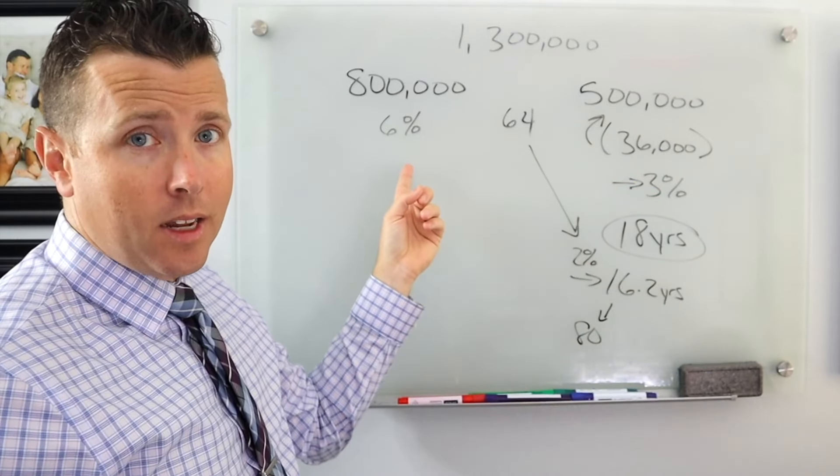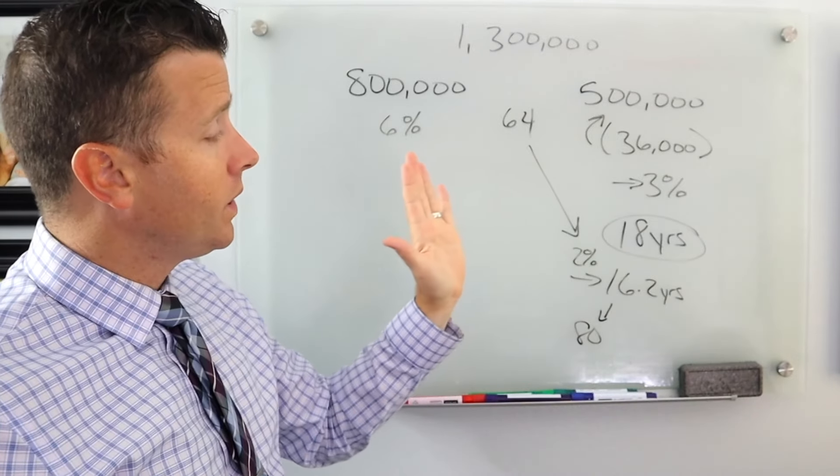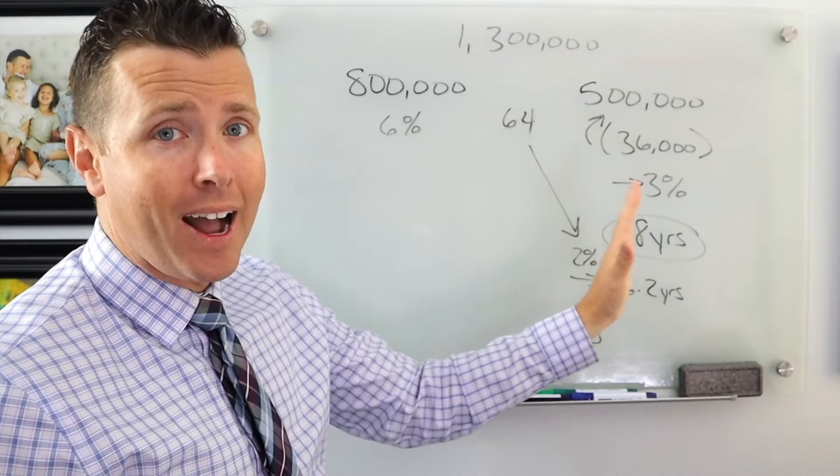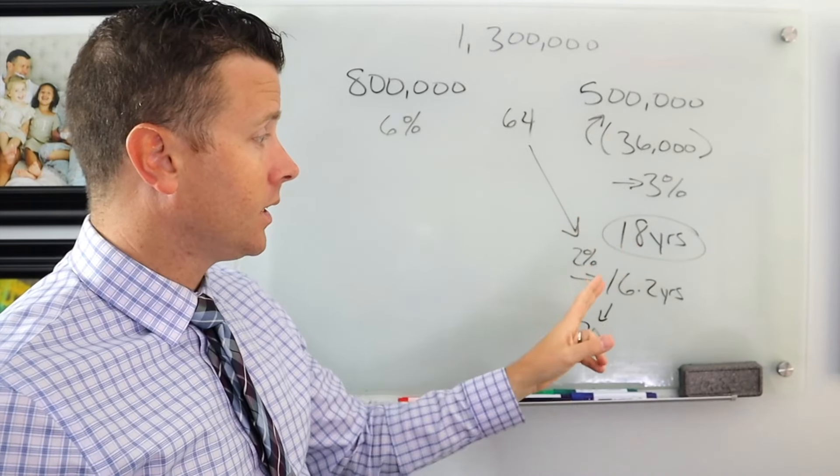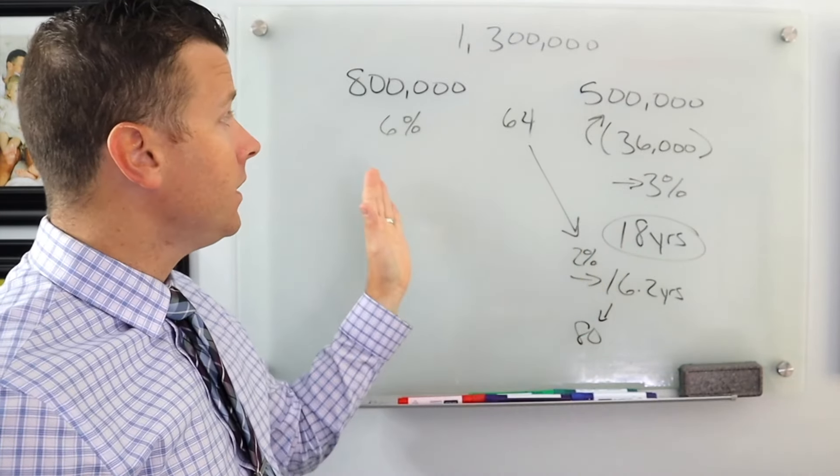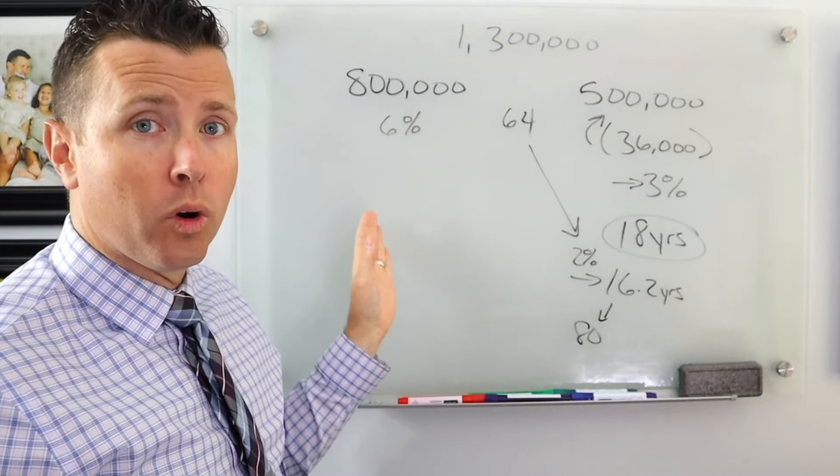But over here we got $800,000. And because we have set aside $500,000 for conservative growth, 3%, 2%, now this side can be more growth oriented.